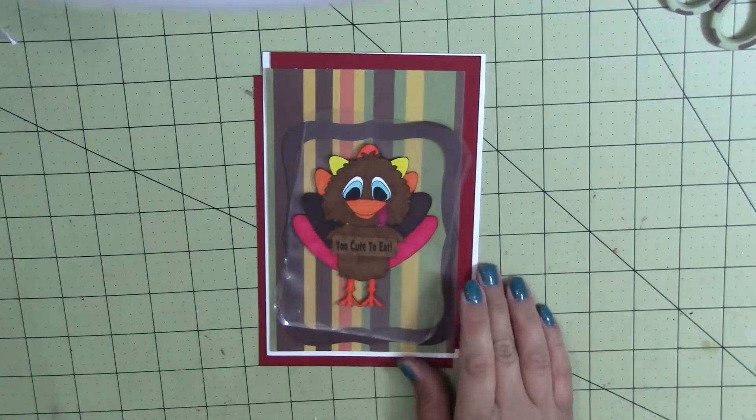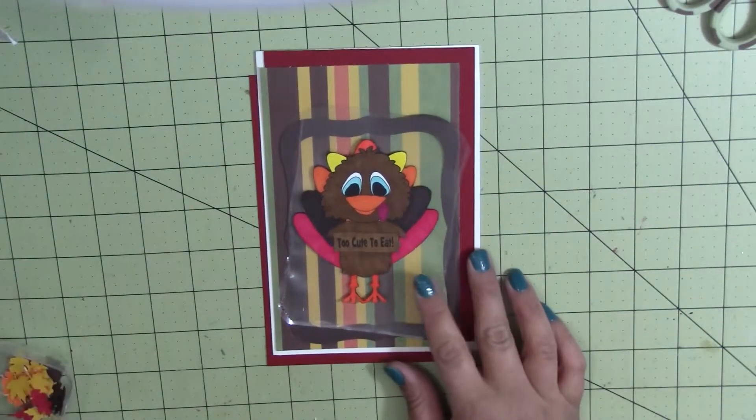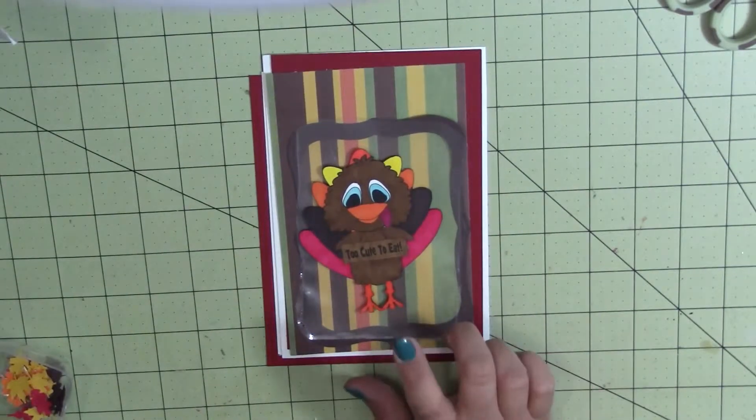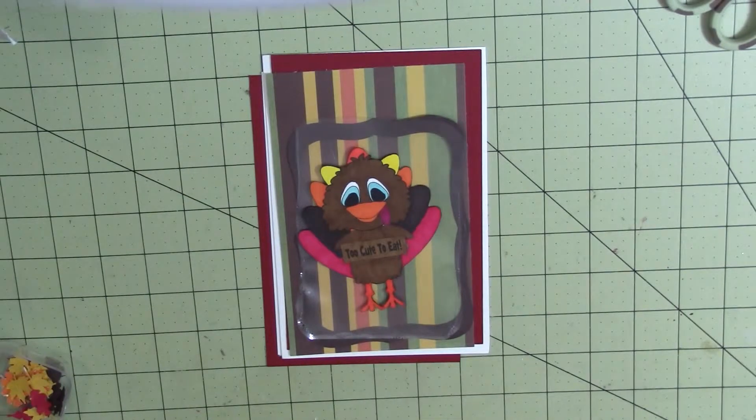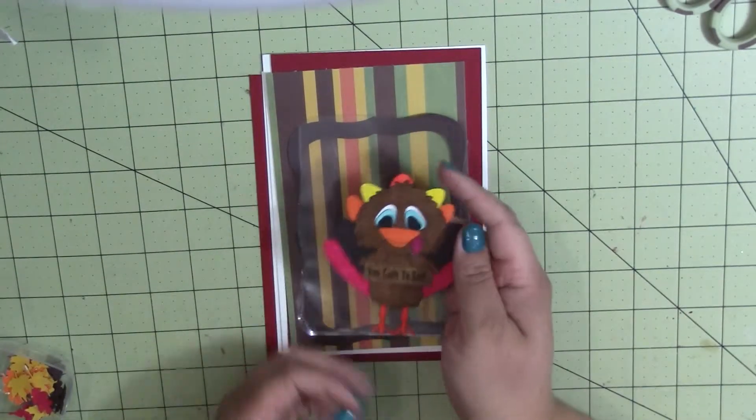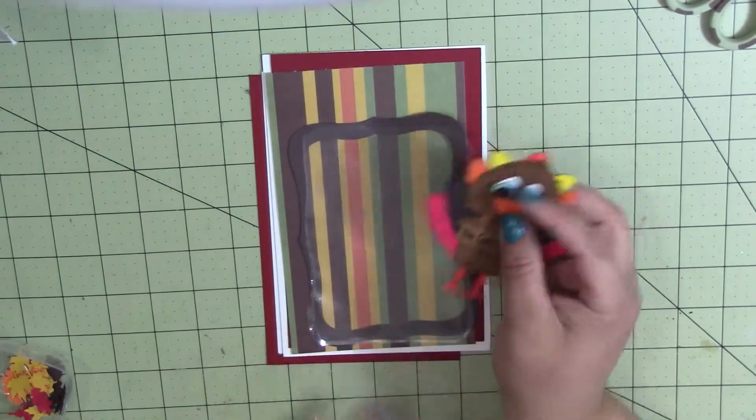This month we are focusing on Thanksgiving. So, I'm going to use this little guy right here who is called Too Cute To Eat. And I'm going to make a shake card. It's rather easy.